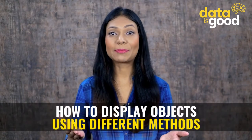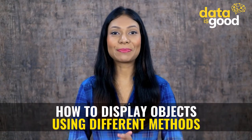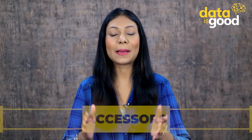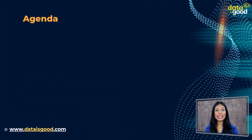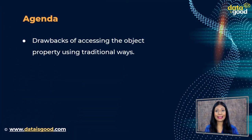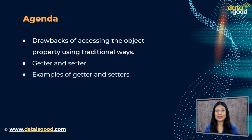Hello and welcome back! We are learning objects in JavaScript. In the last lecture we learned how to display objects using different methods. In today's lecture we are going to learn a very special type of method that will help us access objects in a much easier way. The agenda covers the drawbacks of accessing object properties using traditional ways, then what is a getter and what is a setter, with examples.